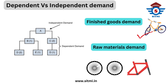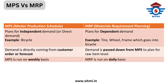This concept helps us understand the difference between MPS and MRP. MPS basically plans for independent demand, which we can also call direct demand. However, MRP plans for dependent demand — that means all the raw materials or sub-components that are required.